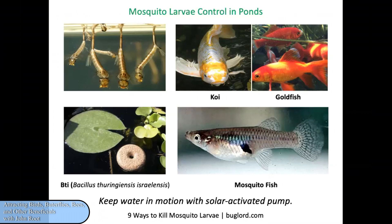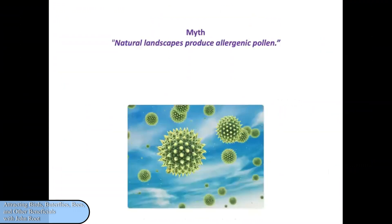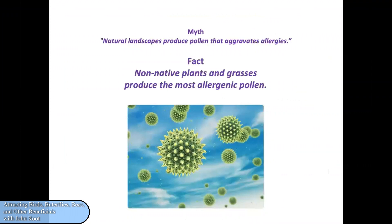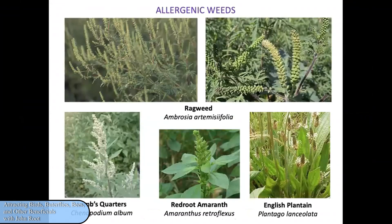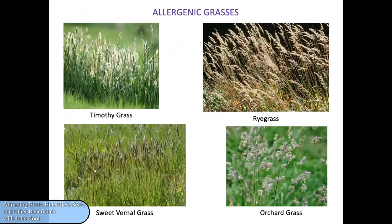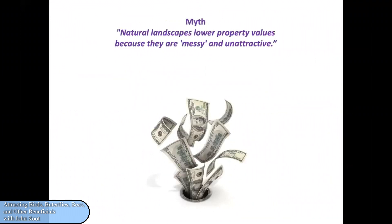There is a bacterium called BTI, or Bacillus thuringiensis israeliensis, sold as mosquito dunks or mosquito bits, which is quite effective at eliminating mosquito larvae. Allergenic pollen affects many people, but it's not native plants that are the problem — it's non-native plants and grasses such as ragweed, public enemy number one for allergy sufferers, and other plants such as lambsquarters, red root amaranth, and English plantain — all wind-pollinated plants. Goldenrod's pollen is not allergenic and not generally wind-borne; it's attractive to pollinators and carried by bees and butterflies, not by the wind. In general, native plantings are not a problem as far as allergies go.